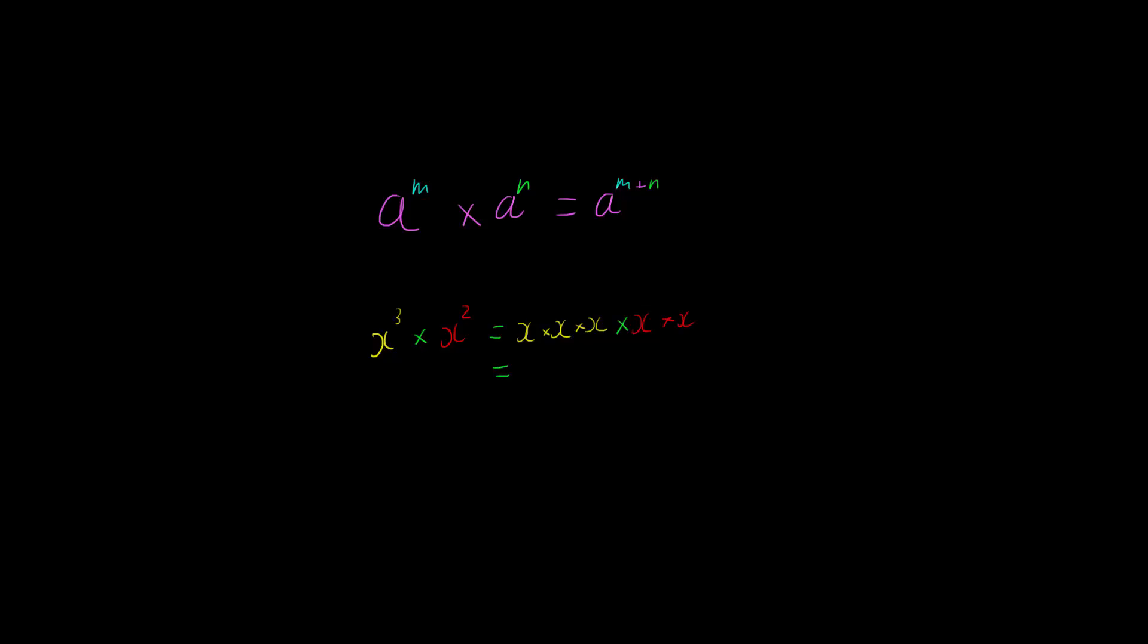This thing gives us x to the power of 1, 2, 3, 4, 5. And if we take the law, which states that if we add the powers together, 3 plus 2 gives us 5. So we have that 3 plus 2 gives us 5. So these two are the same, therefore the first index law works.